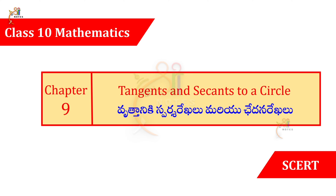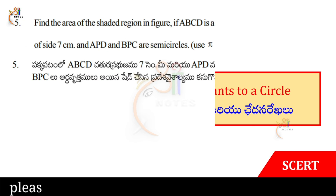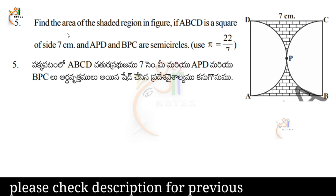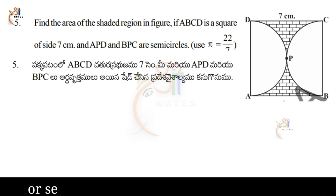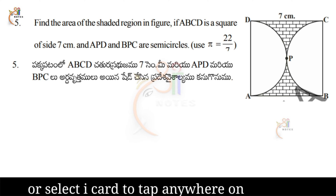Question number 5: find the area of the shaded region in the figure, if ABCD is a square of side 7 centimeters and APD and BPC are semicircles. Use π equal to 22 by 7.